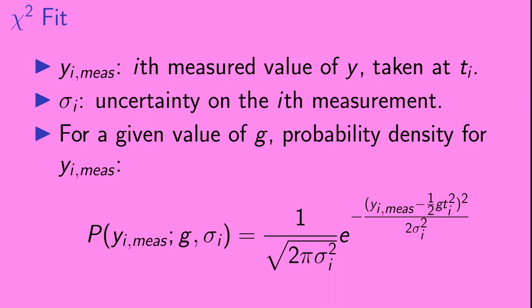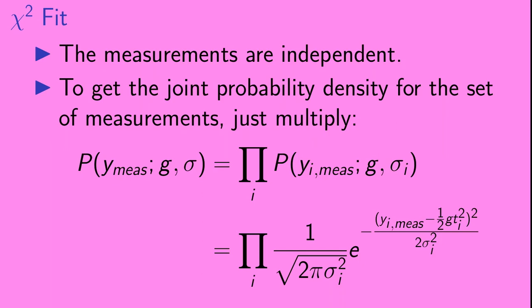Sigma i will be the uncertainty on the i-th measurement. With that, we're ready to give the probability density for y i-measured. Because we assume that our errors are Gaussian distributed, y i-measured will be Gaussian distributed around one-half g t i-squared. The probability density for y i-measured is shown here. If you want more information on where this expression comes from, you might want to check out the videos on Gaussian errors referenced at the beginning of the video.